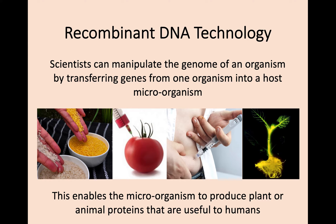The more progressive and slightly more reliable way is recombinant DNA technology, where we manipulate the genome of an organism by transferring genes we want from one organism into a host microorganism. This allows the host microorganism to produce the plant or animal protein that is useful. One example is golden rice, produced by adding the carotene-producing gene from carrots into rice plants to increase vitamin A content for rice-heavy diets.